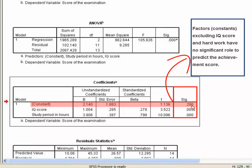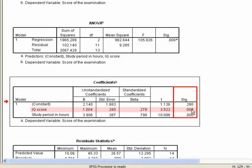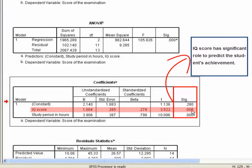Again, the SIG value of constant a1 in IQ score, 0.005, is less than 0.05, which means the IQ score has significant role to predict the student's achievement.